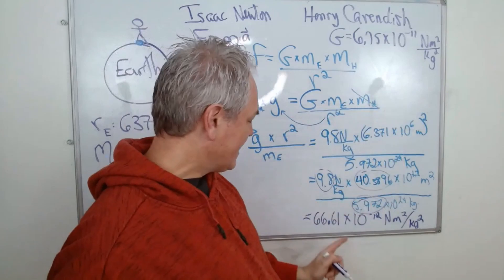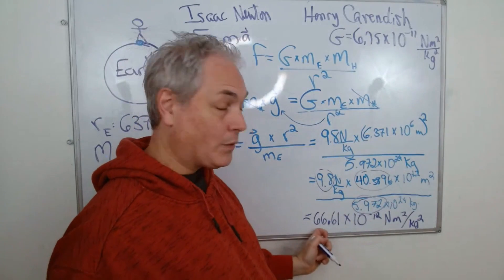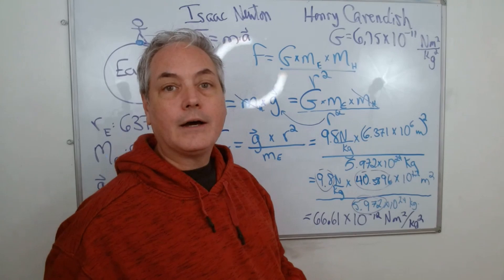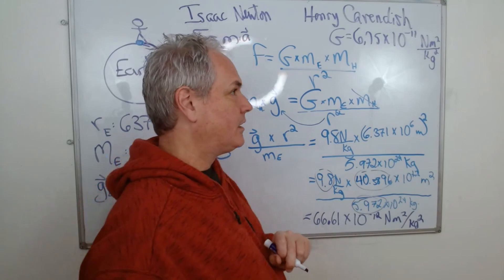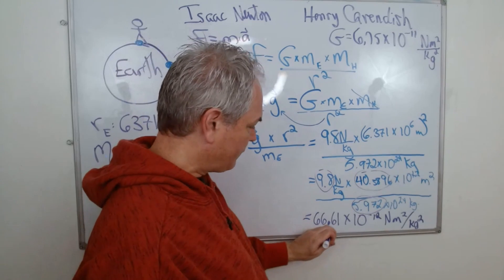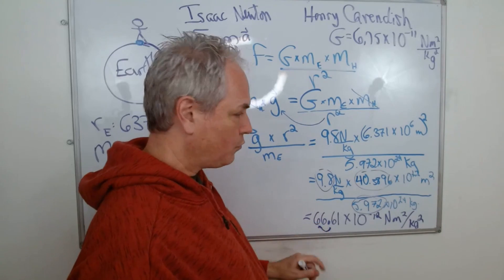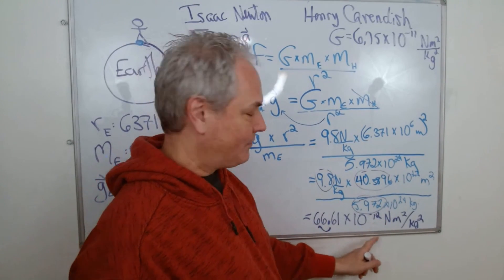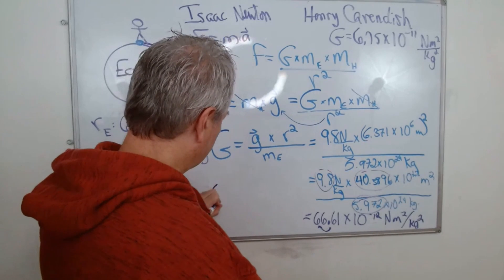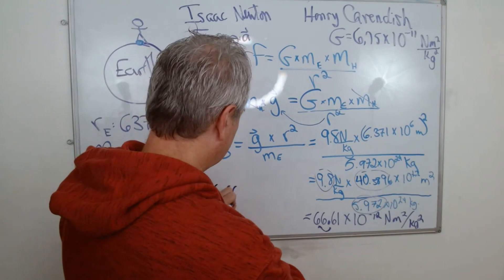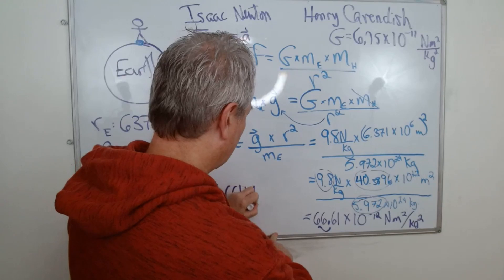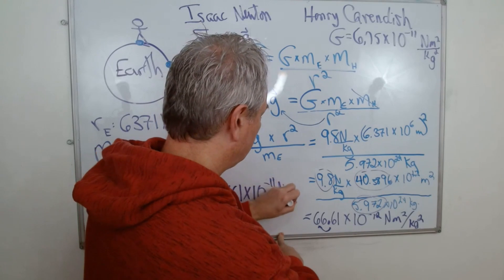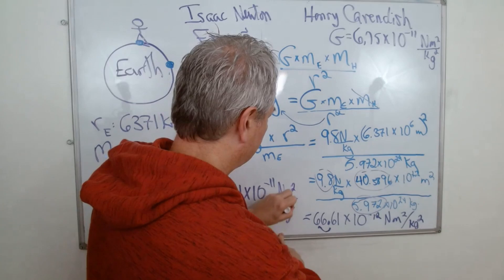Now here I'm looking for a number between 1 and 9.9 because we want to have scientific notation. So if I have the point here and I move it one step this way, from negative 12 I go to negative 11. So the answer here is 6.661 times 10 to negative 11 newton meter squared per kilogram squared.